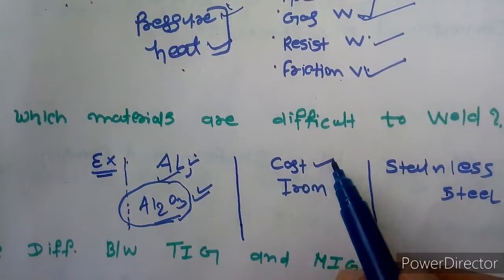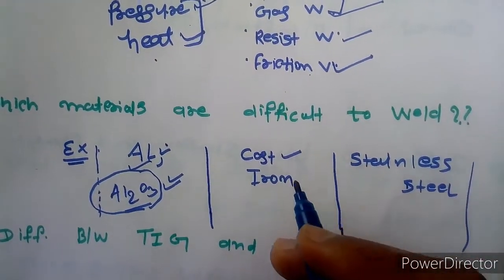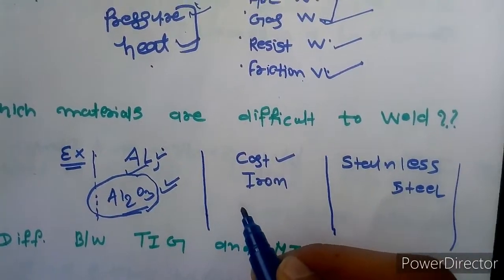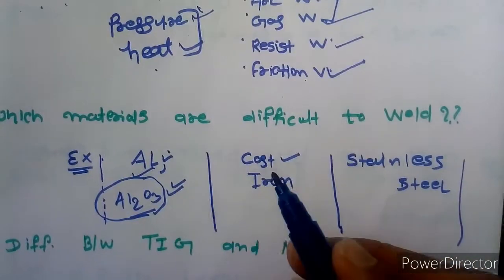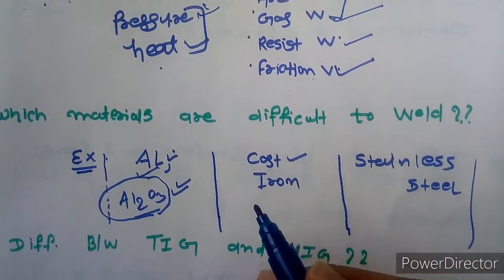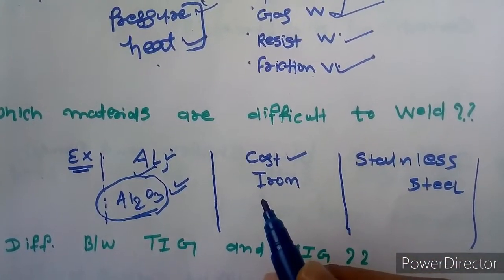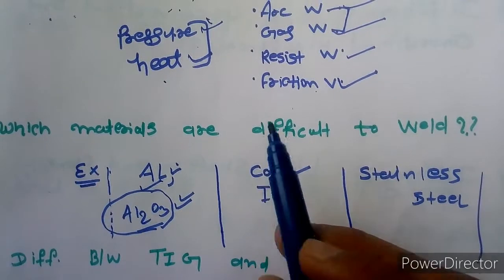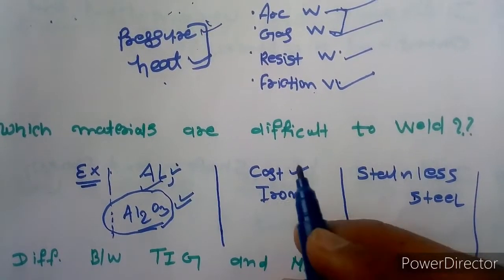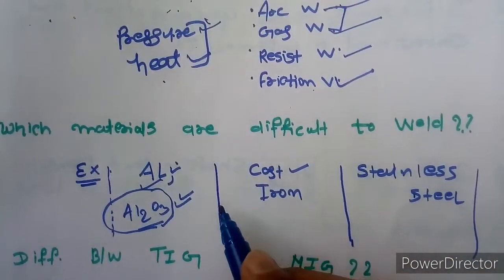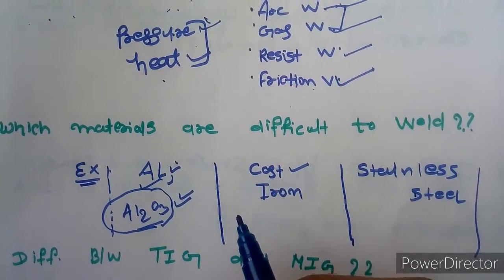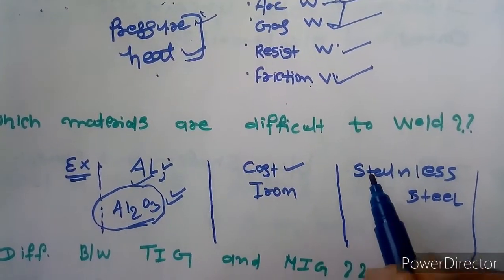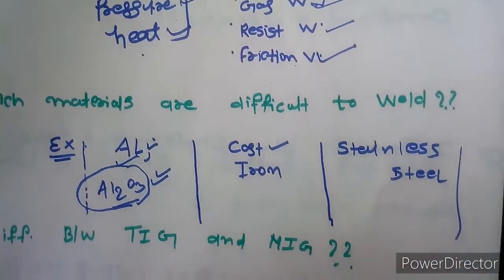Cast iron is also difficult to weld because it is generally prepared by the casting process. In casting, the material does not have very high strength, so when you try to weld cast iron it will slowly melt, which creates a problem. The third difficult material is stainless steel.